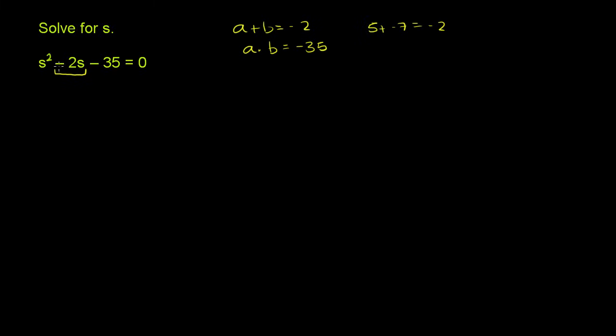So to factor by grouping, you split this middle term. We can split this into, let me write it this way. We have s squared, and then this middle term right here, I'll do it in pink, this middle term right there, I can write it as plus 5s minus 7s, and then we have the minus 35.